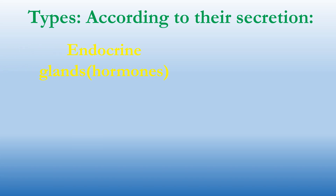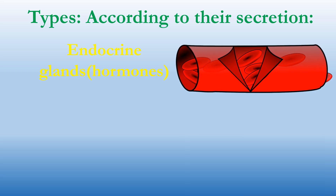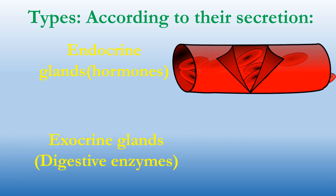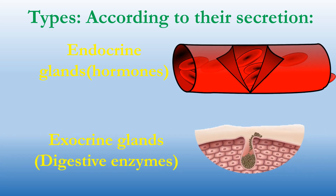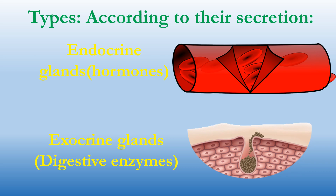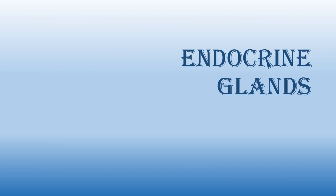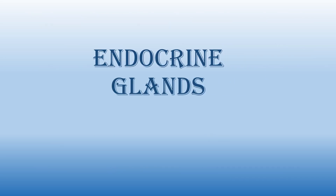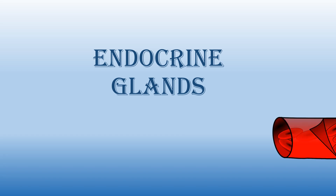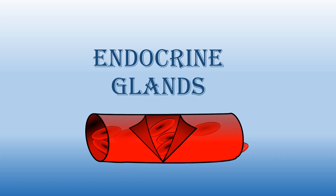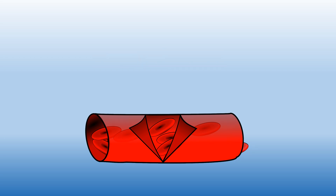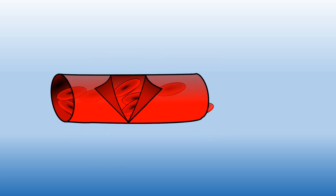According to their secretion, glands are of two types: endocrine glands and exocrine glands. Let's see the detail study about endocrine glands.